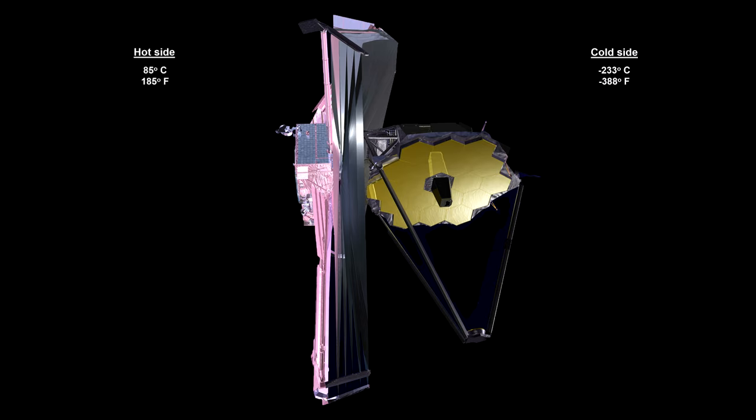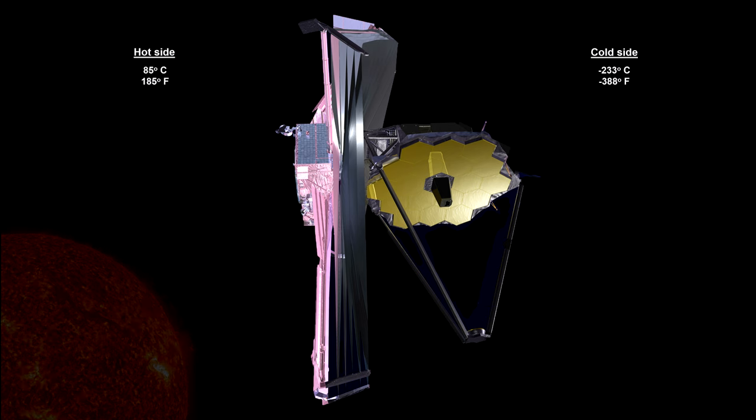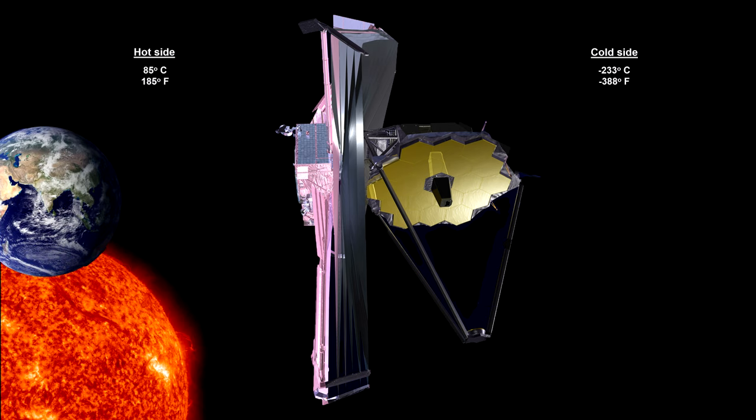The shield can protect against temperatures on its hot side as high as 85 degrees Celsius, that's 185 degrees Fahrenheit, a little under the boiling point for water. If either the Sun, Earth, or the Moon are on the cold side, the telescope won't work. So to have the sunshield be effective protection against the light and heat of the Sun, Earth, and Moon, these bodies have to all be located in the same direction.